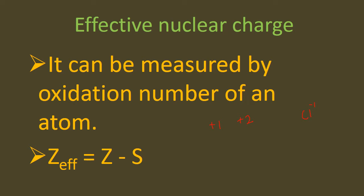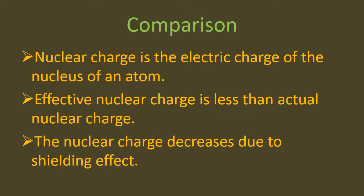We can understand from oxidation number the effect of nuclear charge on the outermost electron — whether the electron is being lost or gained. Z-effect can be measured by a simple formula where Z stands for effective nuclear charge and S stands for shielding effect. Comparing nuclear charge and effective nuclear charge: nuclear charge is the electric charge of the nucleus, simply the attraction of protons towards electrons. Effective nuclear charge is always less than actual nuclear charge, because it is experienced on the outermost electrons and decreases due to shielding from shells present between the nucleus and the valence shell.